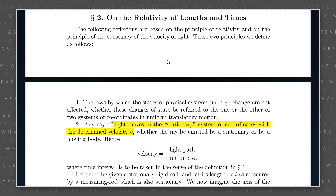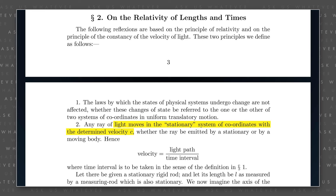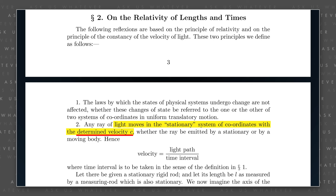Now this seems to contradict the second postulate of special relativity, which says that observers in all inertial reference frames will observe light to travel at a constant speed, provided — as Einstein was careful to qualify —